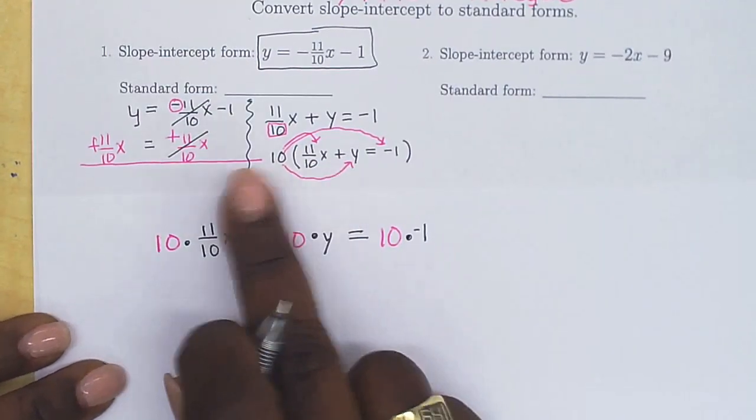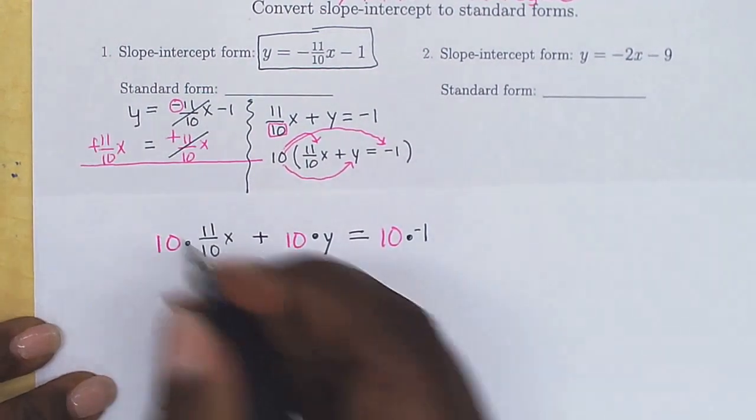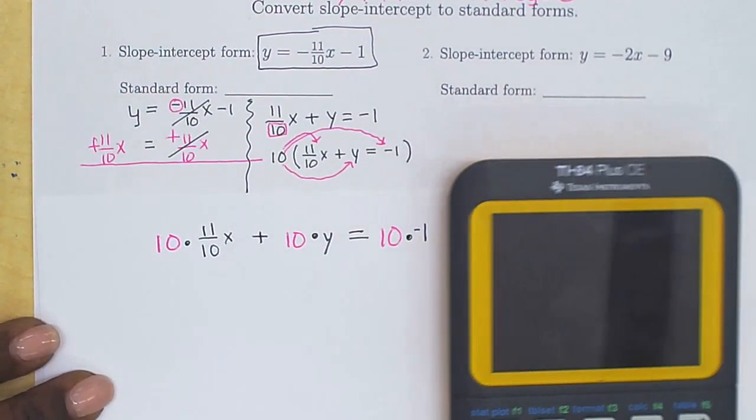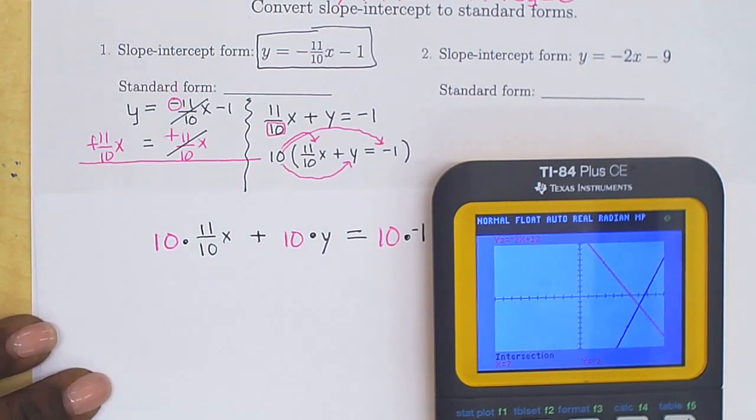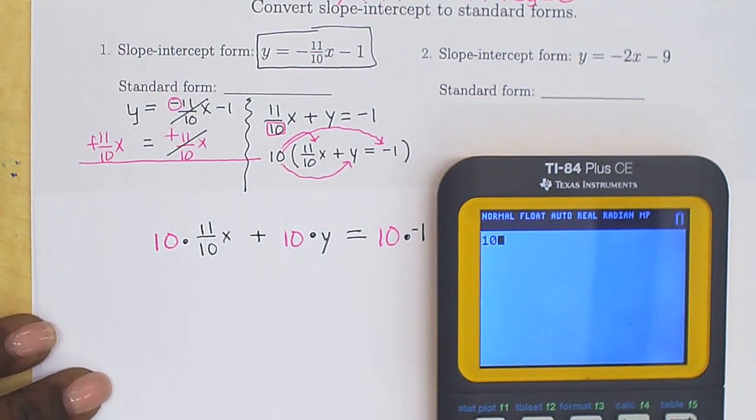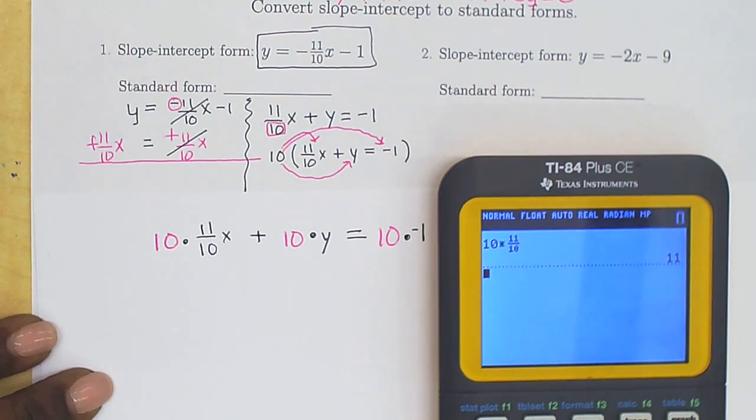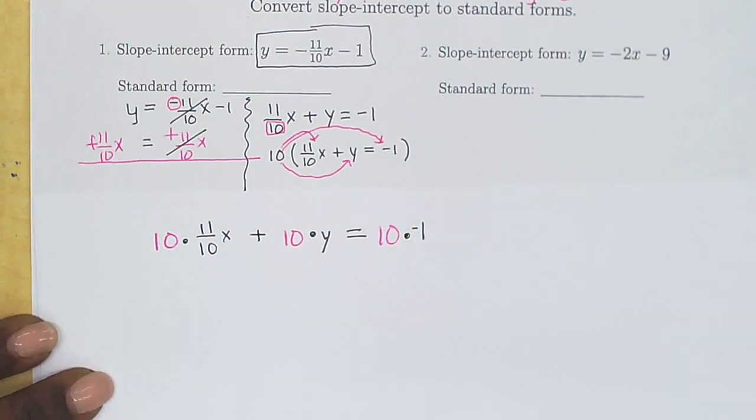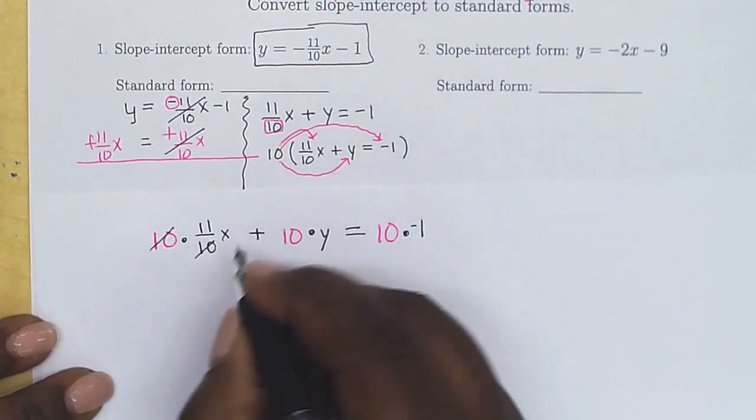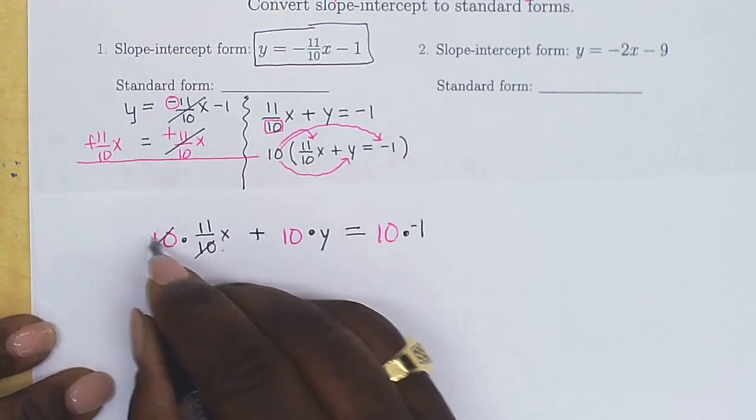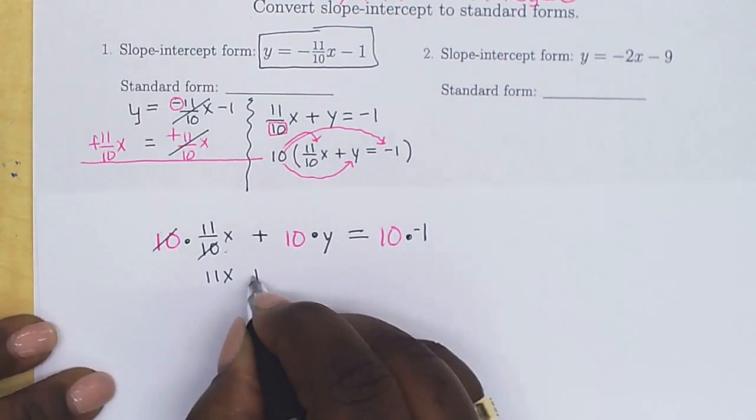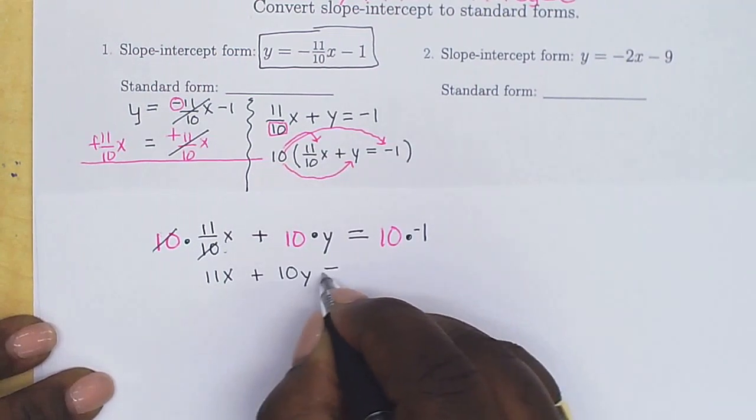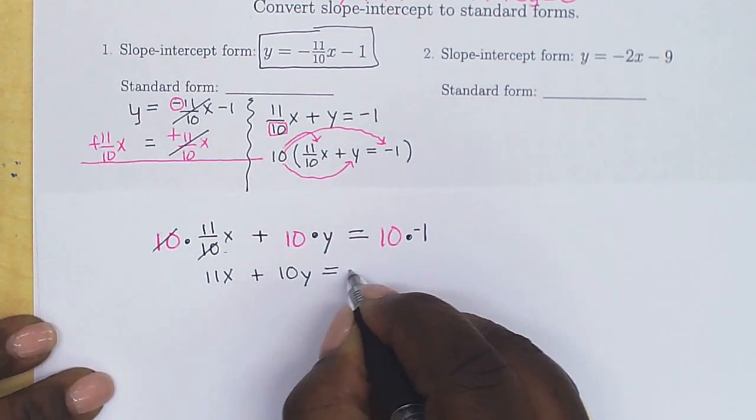So that's going to be 10 multiplied by 11 divided by 10x plus 10 multiplied to y equal to 10 multiplied to negative 1. We're distributing the 10. 10 times 11 over 10, this number and this number 10 are able to become 1, and therefore, we have 11x just left, plus 10 times y is just 10y equals 10 times negative 1 is negative 10.